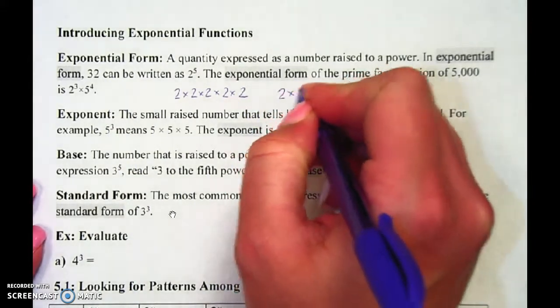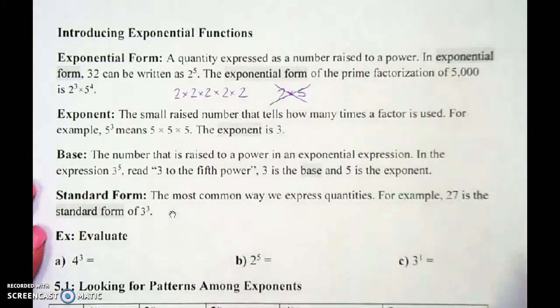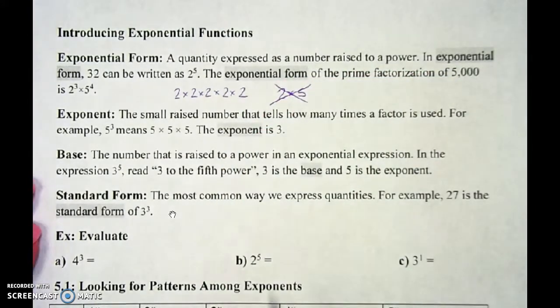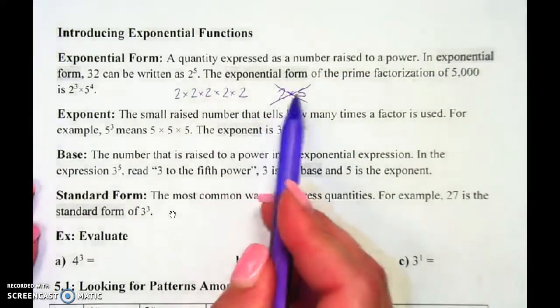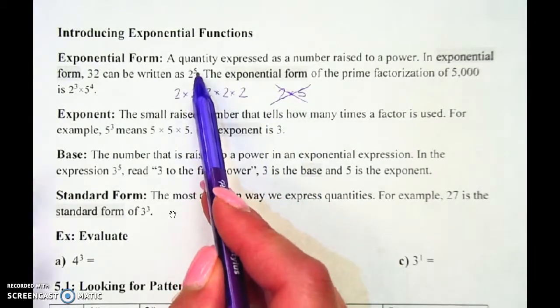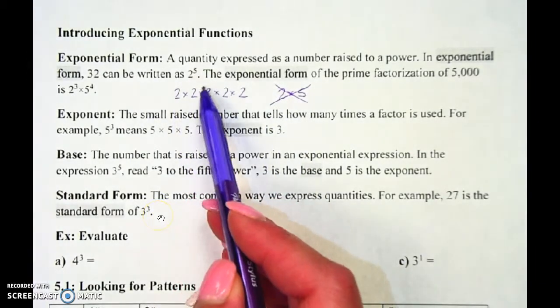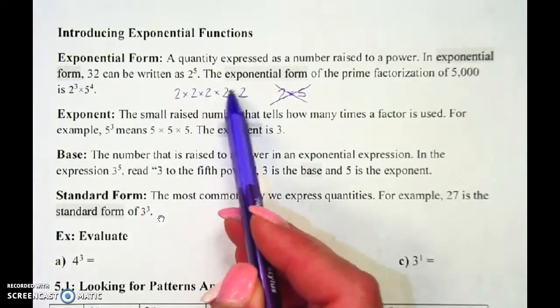Please do not do 2 times 5. I'm going to put a big X through that. If we wanted 2 times 5, we would have simply said 2 times 5. 2 to the 5th power means I did 2 times itself 5 times.